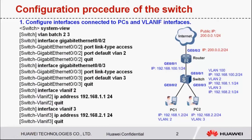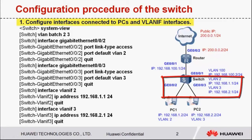Let's move to the configuration procedure. First, let's see the configuration procedure of the switch. There are four steps. Step 1: Configure interfaces connected to PCs as access interfaces and add them to VLAN 2 and VLAN 3 respectively. Configure corresponding VLAN IF interfaces. The IP addresses of the VLAN IF interfaces are the PCs' gateway addresses and are in the same network segment as the IP addresses of the PCs.